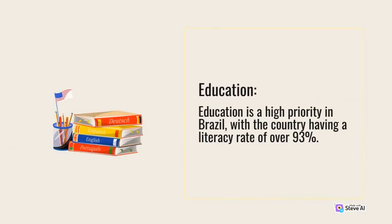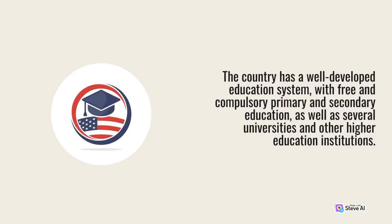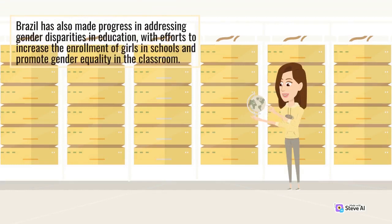Education is a high priority in Brazil, with the country having a literacy rate of over 93%. The country has a well-developed education system, with free and compulsory primary and secondary education, as well as several universities and other higher education institutions. Brazil has also made progress in addressing gender disparities in education, with efforts to increase the enrollment of girls in schools and promote gender equality in the classroom.